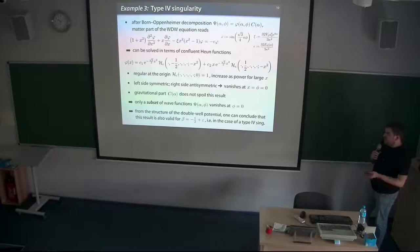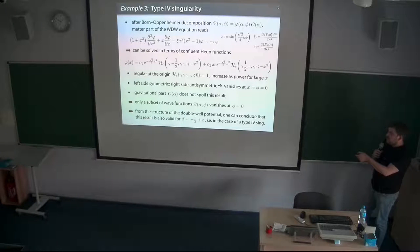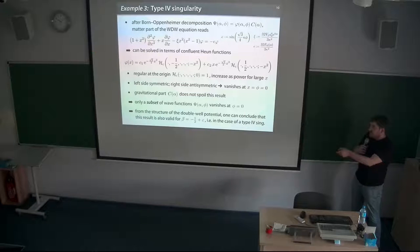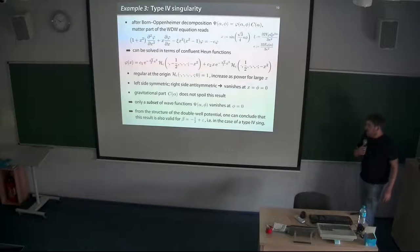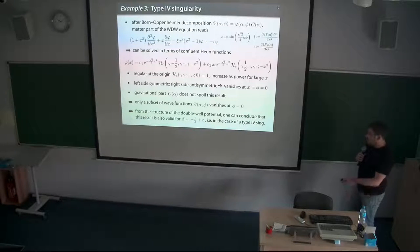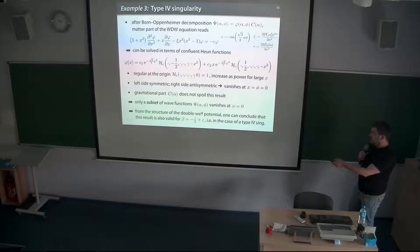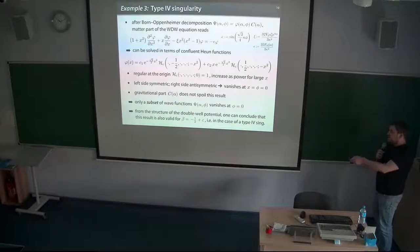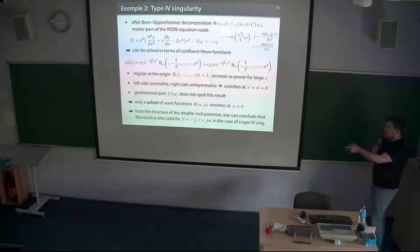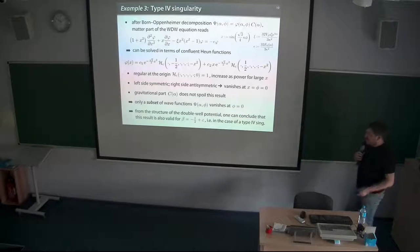The result then is that you have solutions which include only the symmetric part which vanishes at the singularity, but the other anti-symmetric part does not vanish. So only a subset of the valid wave function solutions avoids the singularity. And as mentioned, the overall potential remains the same in the limit approaching a true type four singularity, so we could conclude that — even though this was strictly speaking not a type four singularity — if you could have this beta field, then you have one, and this conclusion remains valid.